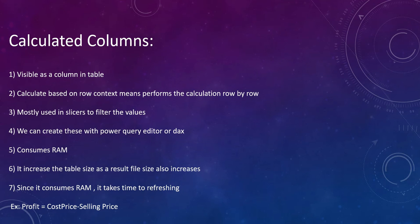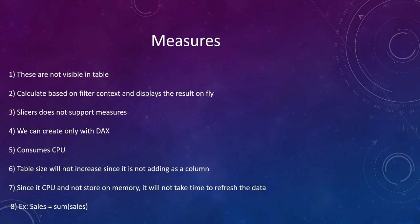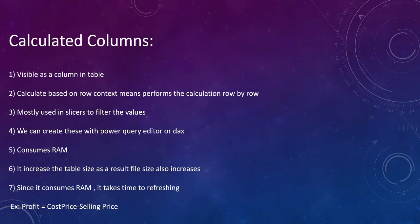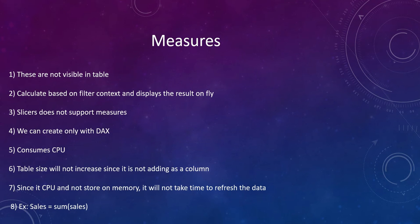Calculated columns are best suited for row-by-row operations and are mostly used with slicers to filter values. Measures, however, do not support slicers — when you drag and drop a measure into a slicer it will not be supported, as I will show in the demo. Calculated columns can also be created using the Power Query Editor, whereas measures can only be created using DAX.